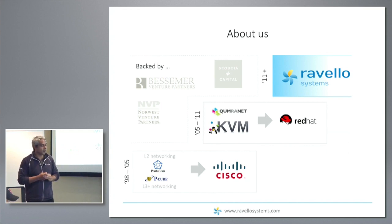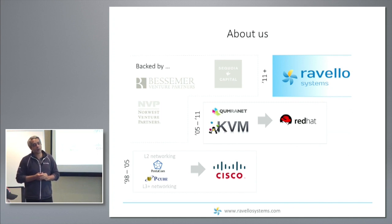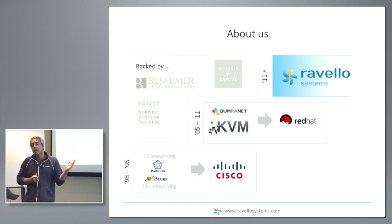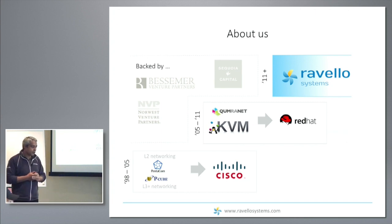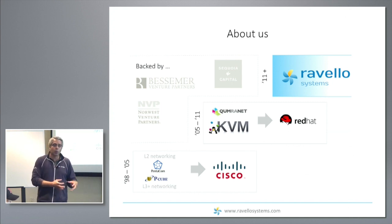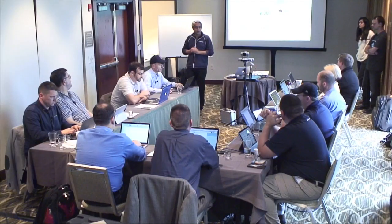They joined Cisco after the acquisition, and I joined Cisco separately — we met there. In 2005, we left Cisco to start Kumranet, where we developed the KVM hypervisor and spent time in the virtualization space. Red Hat acquired us in 2008, and we were there for a while helping Red Hat with virtualization, including some early OpenStack activity. In 2011, we left Red Hat to start Ravello. The DNA of the team is really around infrastructure software — networking, virtualization, and storage.